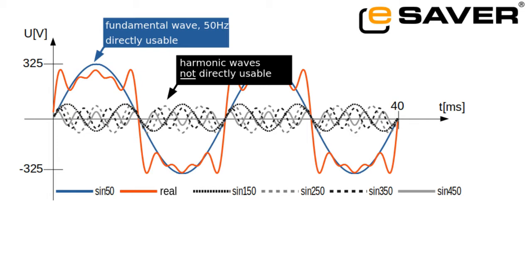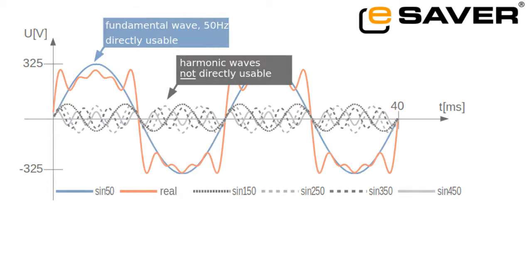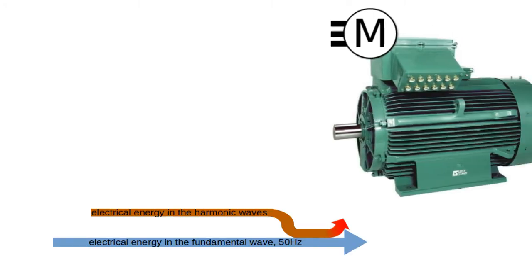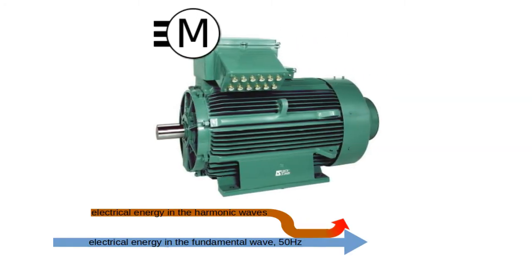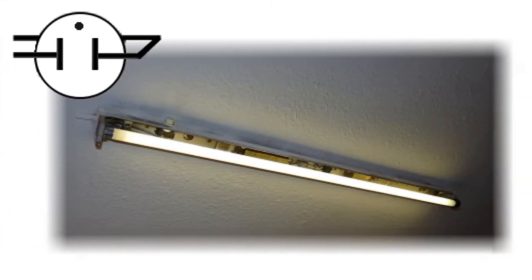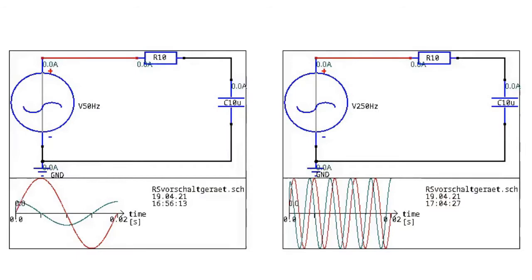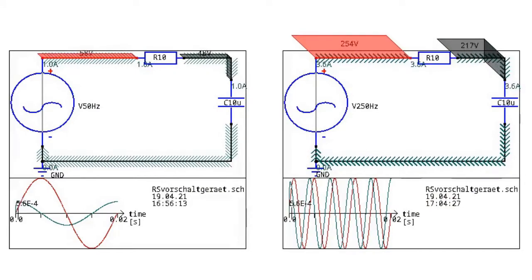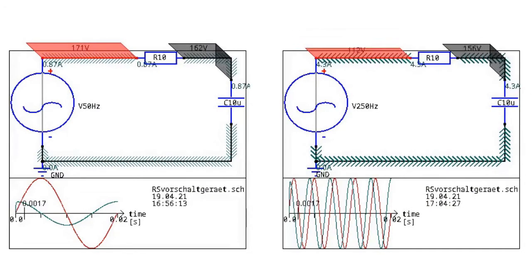For some devices, the harmonics are even problematic. The energy from the harmonic waves is converted into heat by some devices, such as electric motors. Other devices with capacitive components, such as fluorescent lamps, can be overloaded by harmonic waves. This is because the harmonics with high frequency lead to a large current at the capacitors.